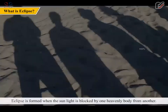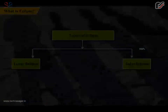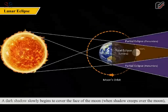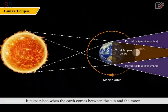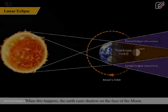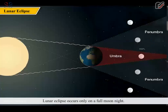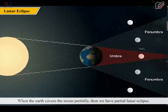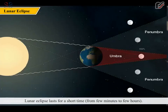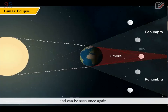An eclipse is formed when sunlight is blocked by one heavenly body from another. There are two types: Lunar Eclipse and Solar Eclipse. A dark shadow slowly begins to cover the face of the Moon during a Lunar Eclipse. It takes place when the Earth comes between the Sun and the Moon, causing the Earth to cast a shadow on the Moon. Lunar Eclipse occurs only on a Full Moon night. When the Earth's shadow covers the complete disk of the Moon, it is called a Total Lunar Eclipse. When the Earth covers the Moon partially, it is called a Partial Lunar Eclipse. A Lunar Eclipse lasts from a few minutes to a few hours. Once the Moon moves out of the Earth's shadow, it starts receiving sunlight and can be seen once again.